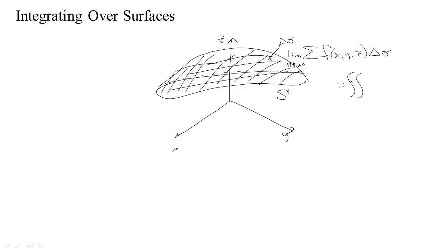We're summing up over an entire surface — two sums because it's two-dimensional — of f of x, y, z times a tiny patch of area d sigma. So we want to learn how to do an integral like that.